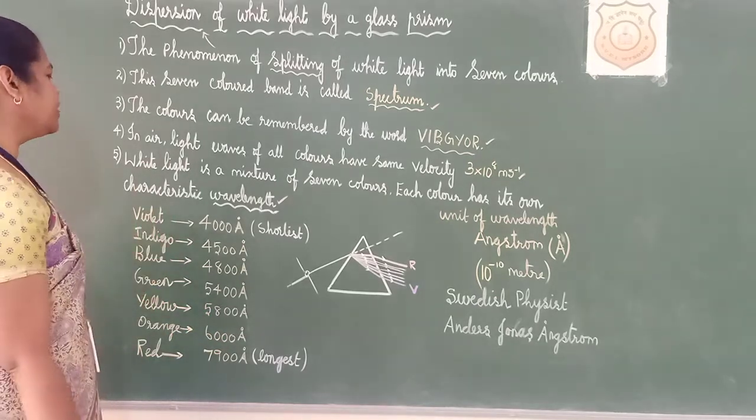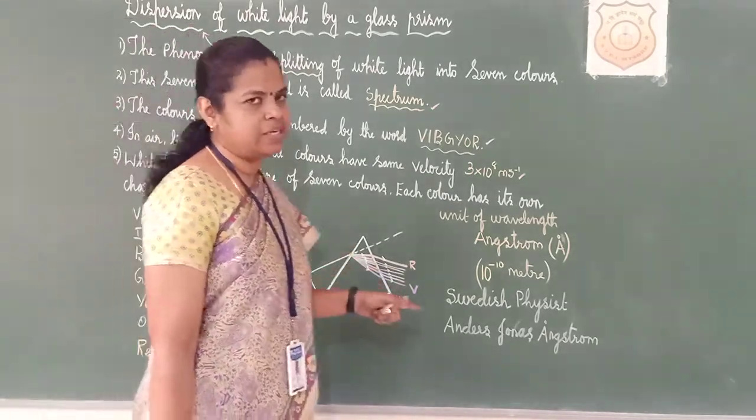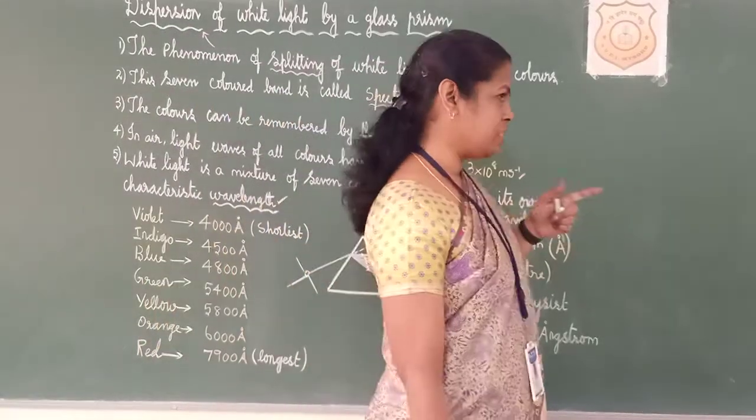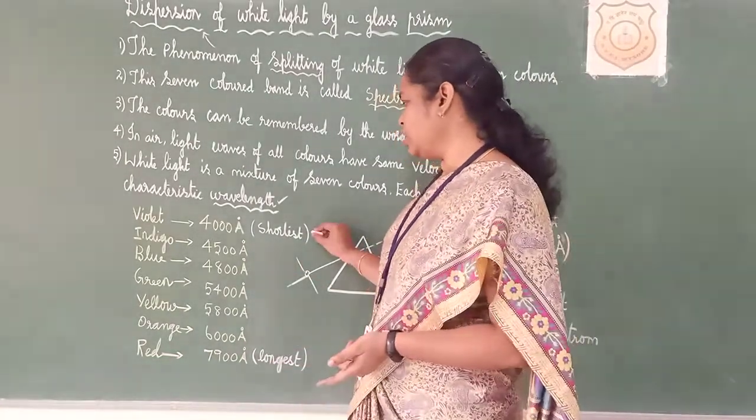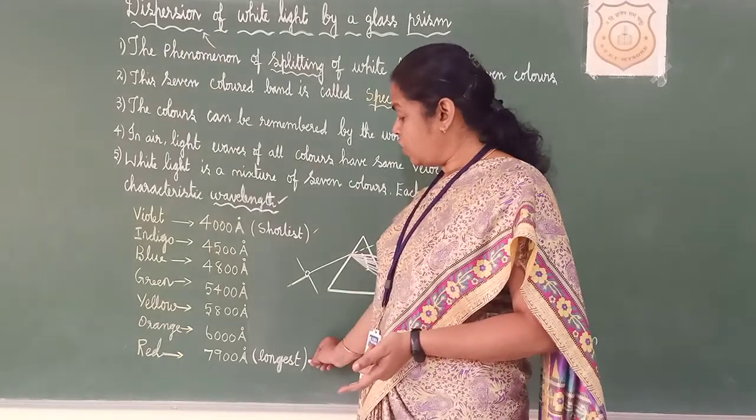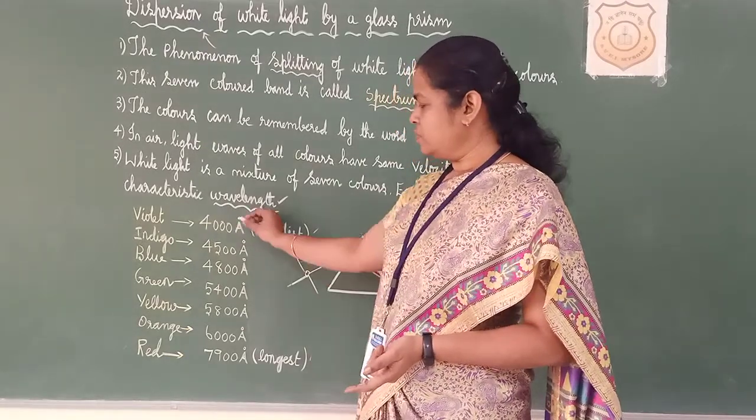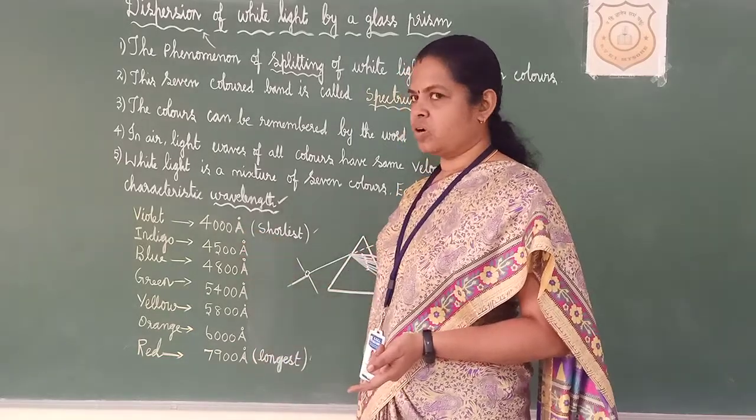Keep this in mind. We will study later. Characteristic wavelength is there for each and every colour. When you are starting with violet, violet will be having the shortest wavelength, and red will be having the longest wavelength. Just go through this also. They have given the wavelength 4000 Angstrom.